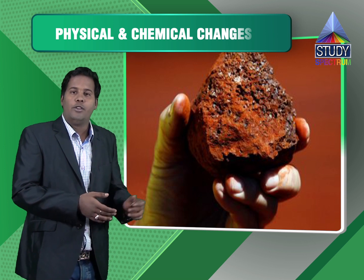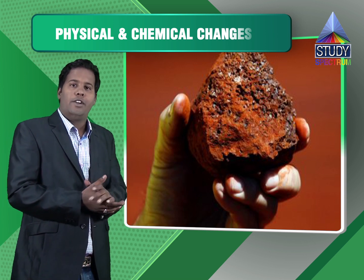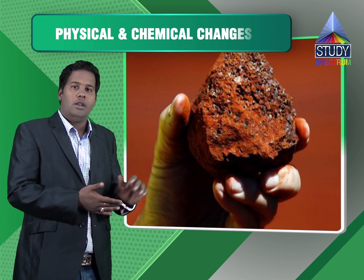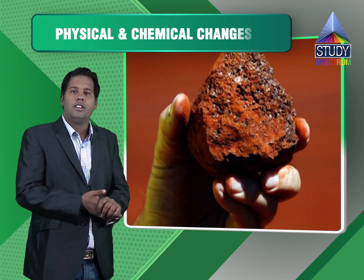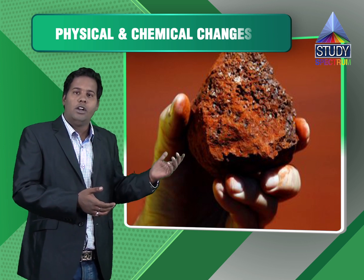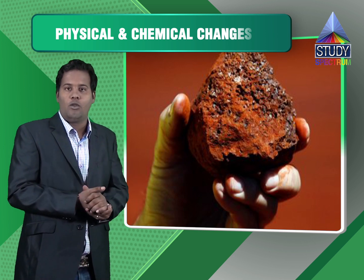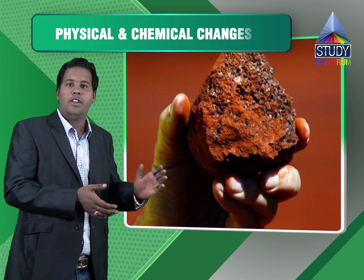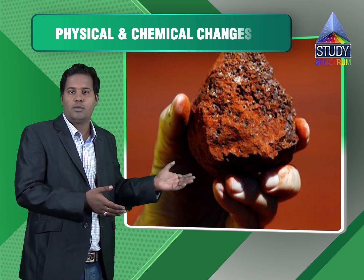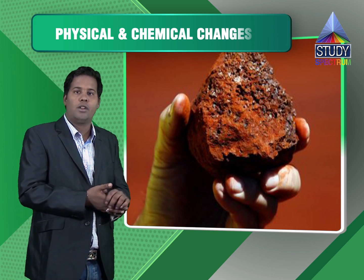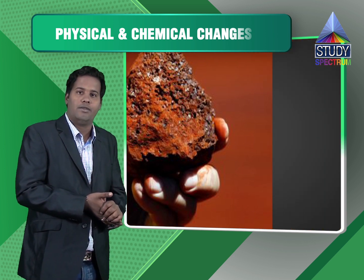Now if you see this reaction, copper sulfate was originally blue in colour, whereas now it will turn into pale green colour. Why? Because FeSO4 has been formed — iron has displaced copper from its own solution, copper sulfate.